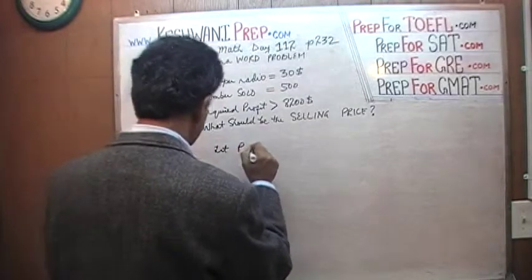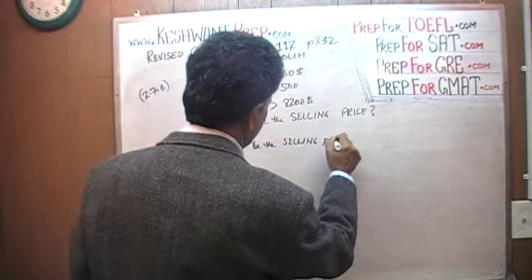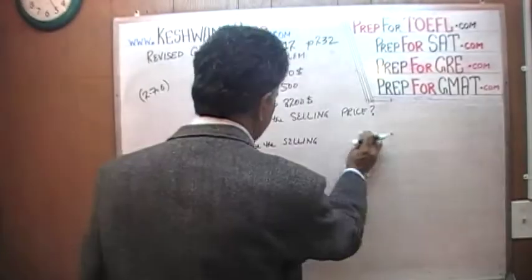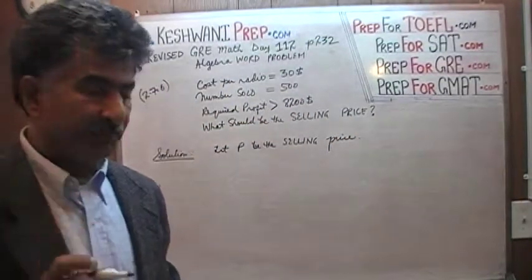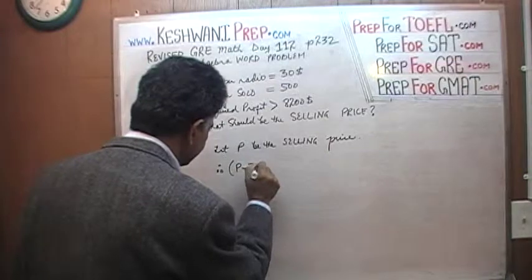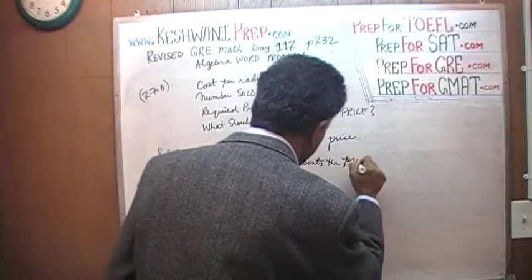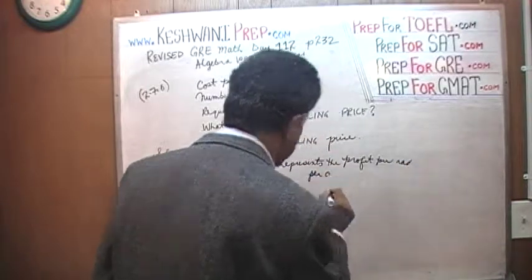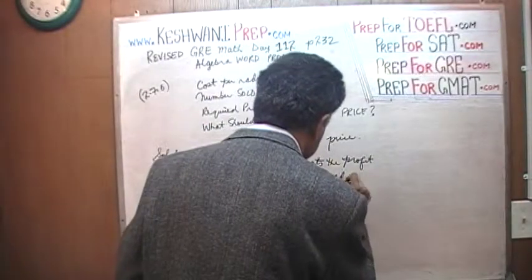Let P be the selling price. Our unknown here is P — P for price. If P is the selling price, then it implies that P minus 30 must represent the profit per radio.